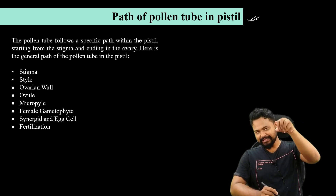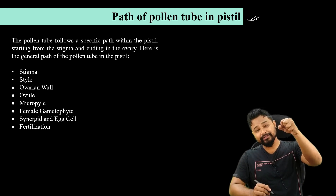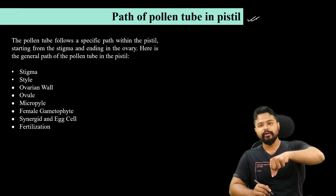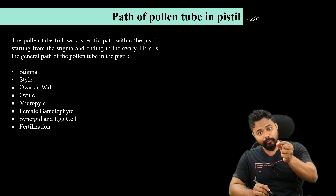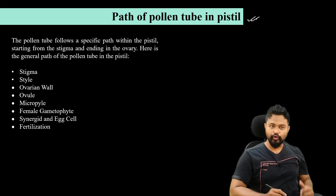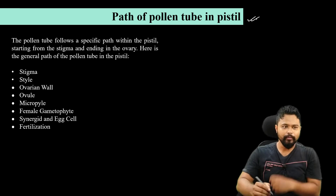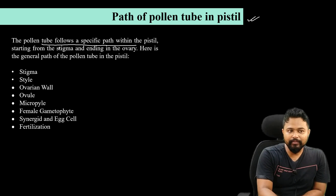When pollen reaches the pistil or stigma, the pollen tube germinates — pollen tube formation occurs. The pollen tube follows a specific path within the pistil, starting from the stigma and ending in the ovary. Here is the general path of the pollen tube in the pistil.